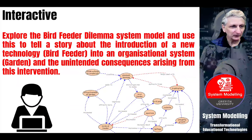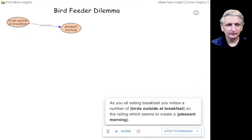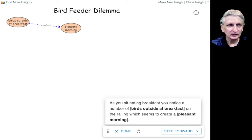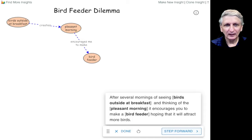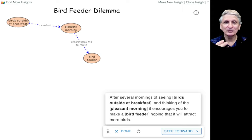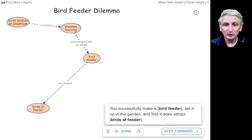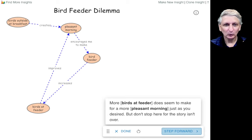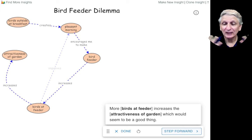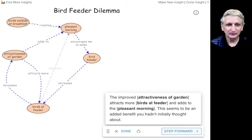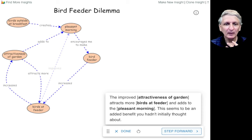This particular interaction allows us to step through the processes occurring in the simulation, where someone notices that having birds outside when eating breakfast on their patio made it a more pleasant environment. So to encourage more birds, they decided to introduce a bird feeder, which increased the number of birds and made things more and more pleasant. It also increased the attractiveness of the garden, which made it even more pleasant and increased the number of birds coming to the garden as well. But there are also some other consequences.